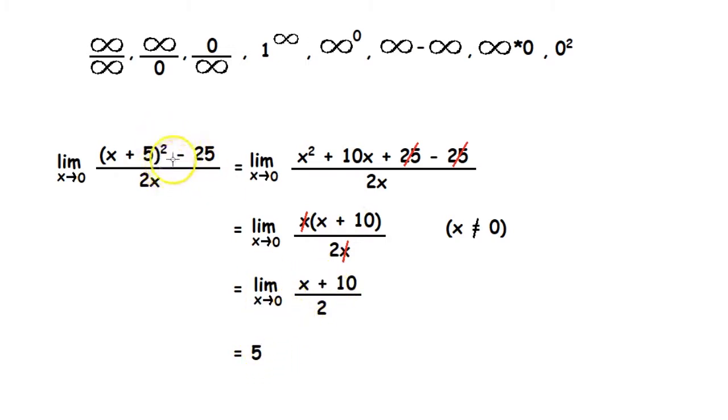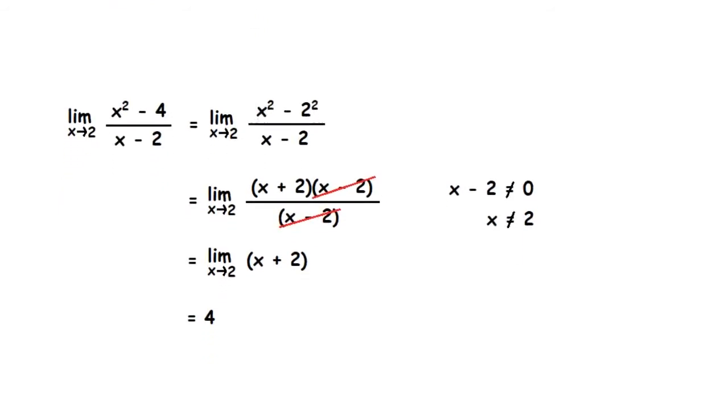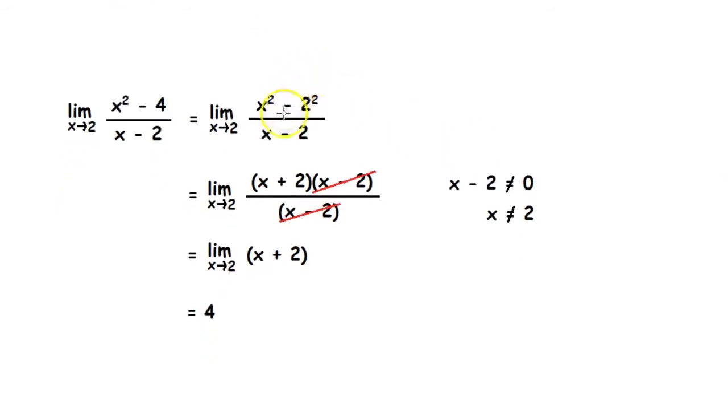So in this function the limit does exist. Another method of evaluating limits is by canceling the common factor. Let's take this example: limit of x² - 4 divided by x - 2 as x tends to 2. First we try our direct substitution method.